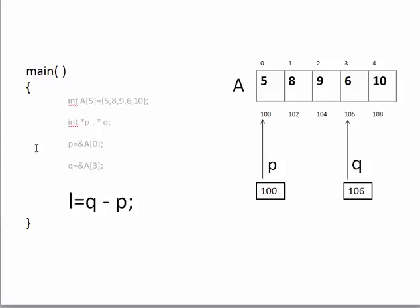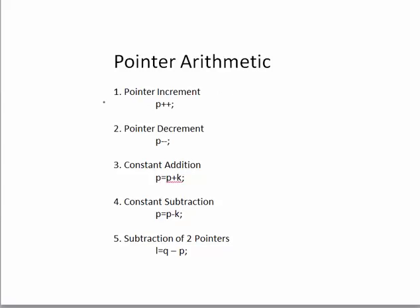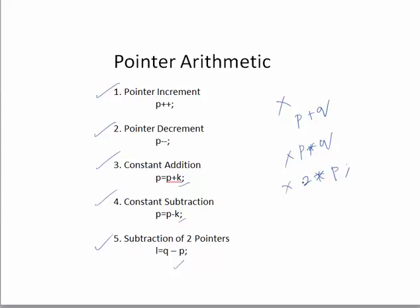These are the arithmetic operations allowed on pointers: P++, P--, P + constant, P - constant, and subtracting two pointers. We cannot add two pointers, we cannot multiply two pointers, and we cannot multiply a constant with a pointer — these operations have no meaningful sense for addresses. Only operations that have logical meaning — like moving to next or previous element — are allowed.